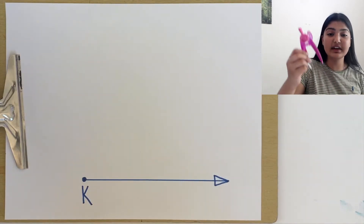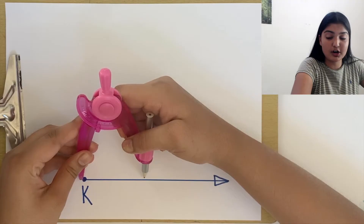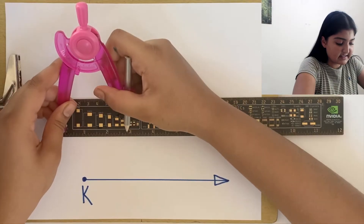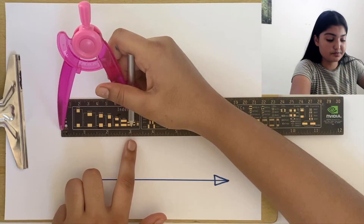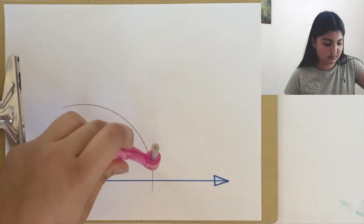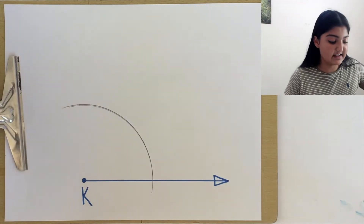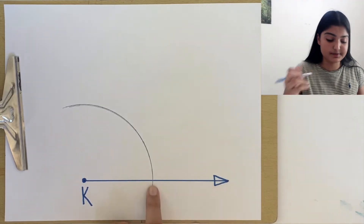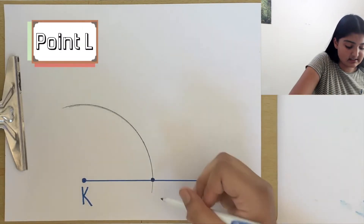To construct our angle, we can use a compass. Now we can take any measurement on our compass. For this case, let's take a measurement of about three inches. Placing the leg of the compass on K, make an arc. This arc intersects our horizontal ray at a point. Let's label this point as L.